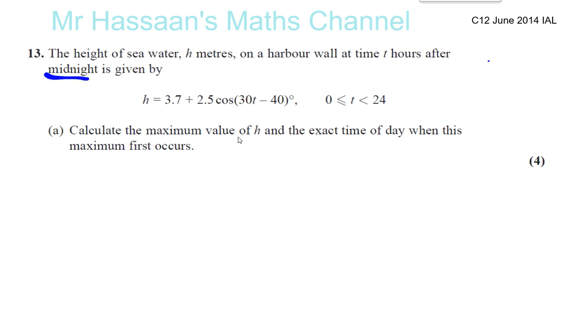Calculate the maximum value of h and the exact time of day when this maximum first occurs. So we've got to find the maximum value that this can take. We're going to find the maximum value of the height. So you've got 3.7 plus 2.5 times something. Now 3.7 is fixed, 2.5 is fixed.